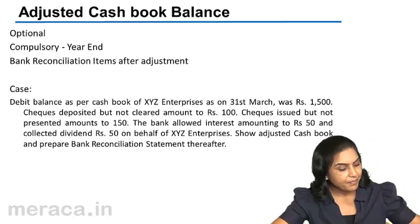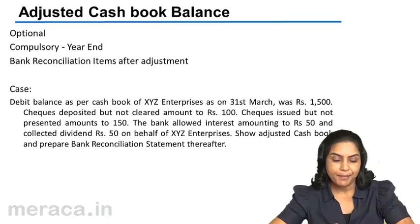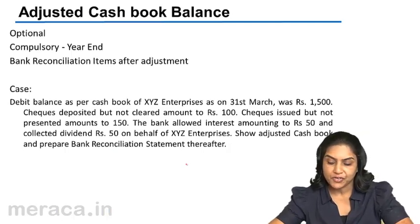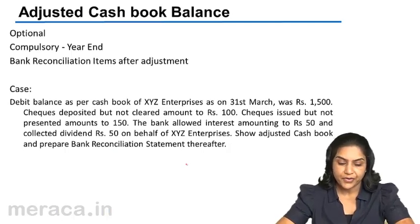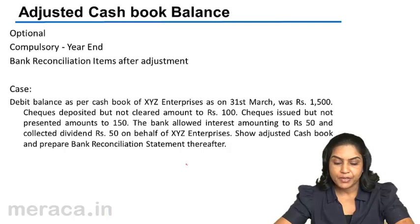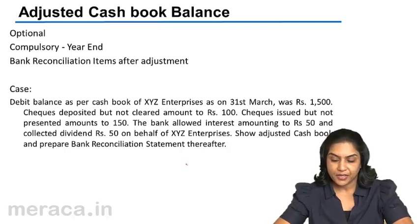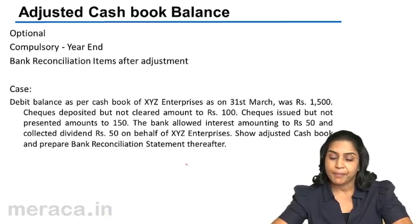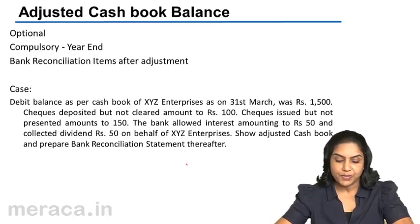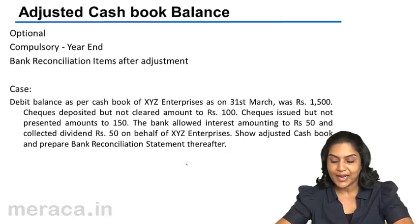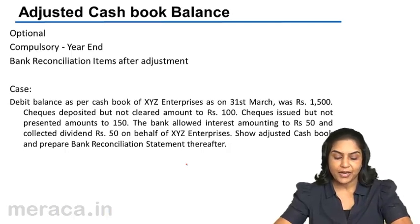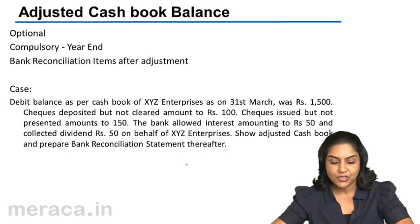An example has been given here. Debit balance as per cash book of XYZ enterprises as on 31st March was £1,000. Checks deposited but not yet cleared amounted to a certain amount. Checks issued but not yet presented amounts to a certain amount. The bank allowed interest amounting to Rs50 and collected dividend on behalf of XYZ enterprises. Show the adjusted cash book and prepare a bank reconciliation statement.